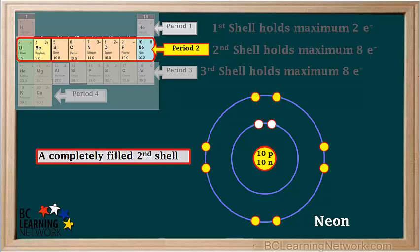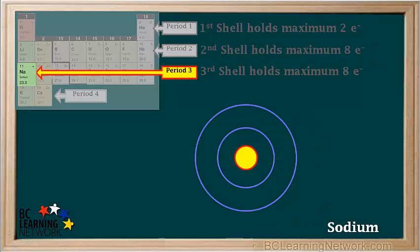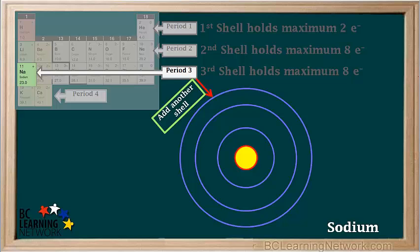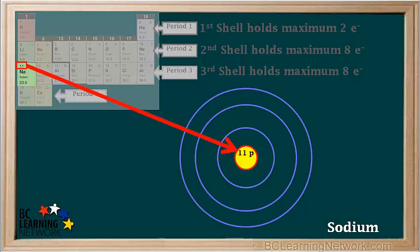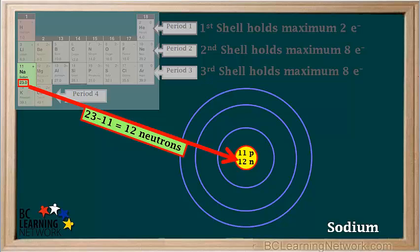We've now come to the end of Period 2 on the Periodic Table, and we've just filled up the second shell. The next element, Sodium, is in Period 3, so we'll need to add another shell to our model. Now we're showing three shells. Sodium has 11 protons, and its most common form has 23 minus 11, which is equal to 12 neutrons in its nucleus.